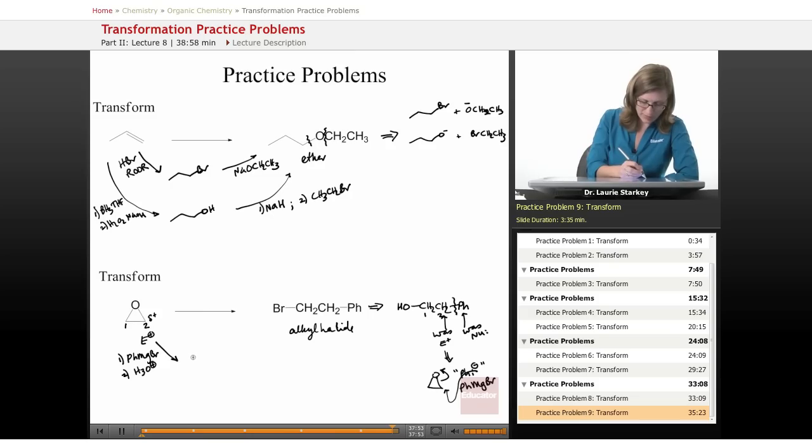Okay, that's going to give us an OH and a phenyl. So my phenyl is added to one carbon and the OH ends up on the next carbon over. And then how do I go from the OH to the bromide? I use something like PBR3 to do a substitution.